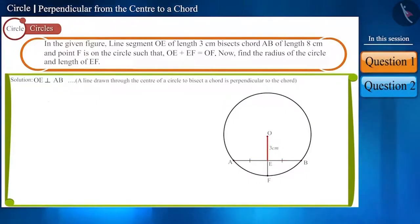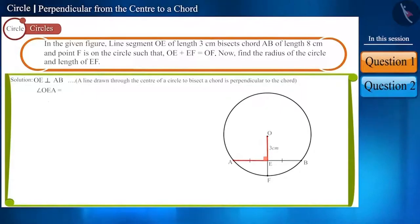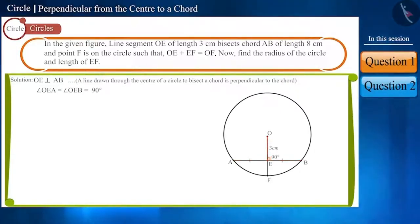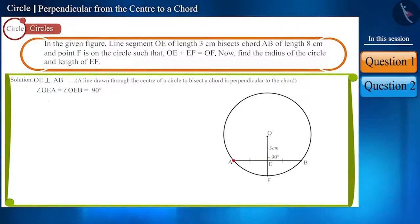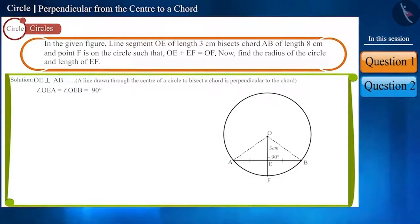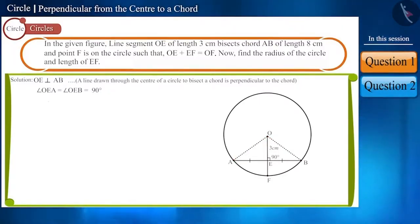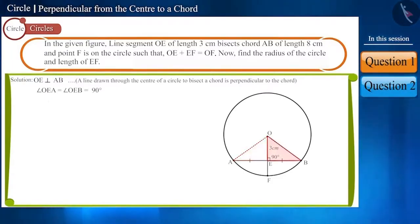Therefore, angle OEA and angle OEB will be 90 degrees. If we join O with point A and point B, then we get the radii of the circle OA and OB, and the two right angle triangles OEA and OEB.